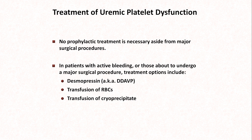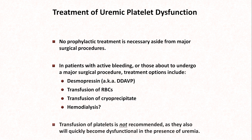One might assume that if circulating toxins were thought partially responsible for uremic platelet dysfunction, hemodialysis would be an appealing treatment strategy. While this is sometimes done and advocated for in some patients, bleeding tests are actually acutely worsened by dialysis, and its role seems unclear. One treatment strategy which should not be employed is transfusion of platelets, since any new platelets introduced to the circulation will quickly become dysfunctional as well.